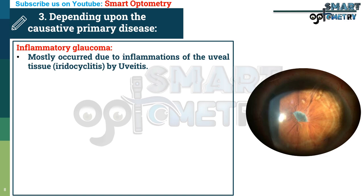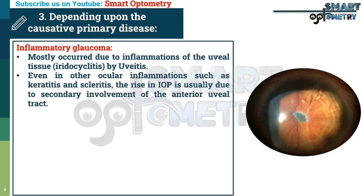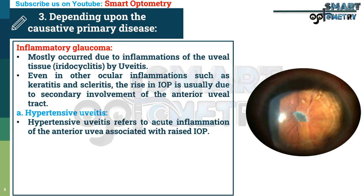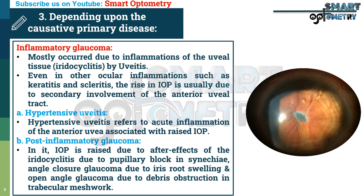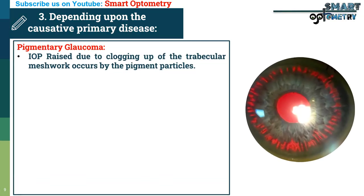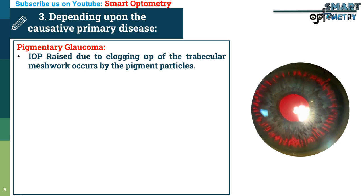2. Inflammatory glaucoma — mostly occurs due to inflammation of the uveal tissue, i.e., iridocyclitis or uveitis. Even in other ocular inflammations such as keratitis and scleritis, the rise in IOP is usually due to secondary involvement of the anterior uveal tract. Inflammatory glaucoma is divided into: a. Hypertensive uveitis — acute inflammation of the anterior uvea associated with raised IOP, and b. Post-inflammatory glaucoma — IOP is raised due to after-effects of iridocyclitis, including pupillary block by synechiae, angle closure due to iris root swelling, and open angle glaucoma due to debris obstruction in the trabecular meshwork. 3. Pigmentary glaucoma — IOP raised due to clogging of the trabecular meshwork by pigment particles.